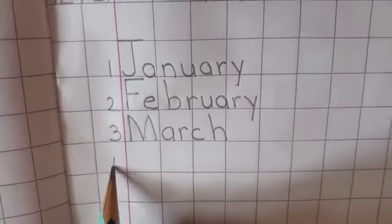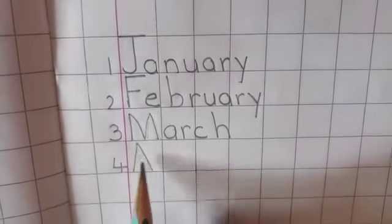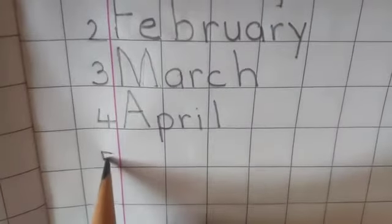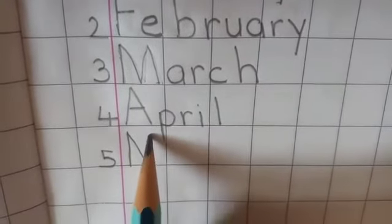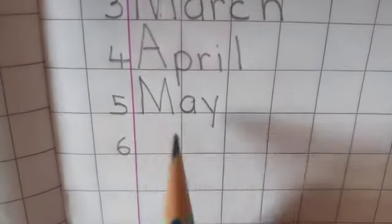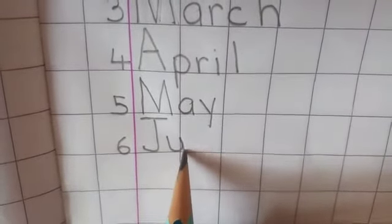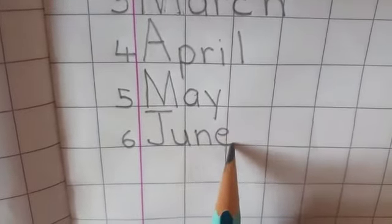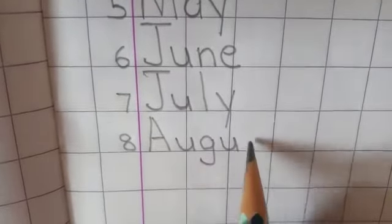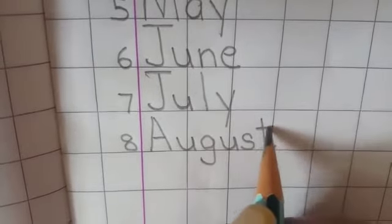Now 4th month is April. APRIL. 5th month MAY. 6th month JUNE. 7th month JULY. And the 8th month is AUGUST.